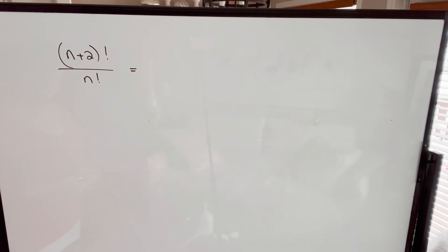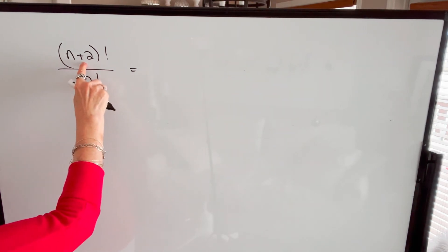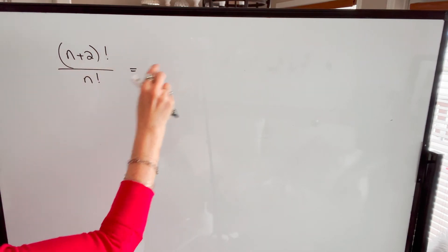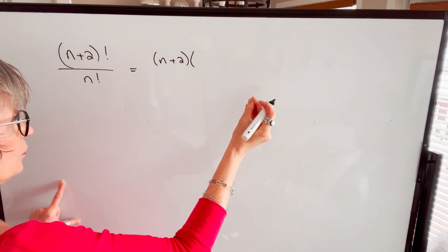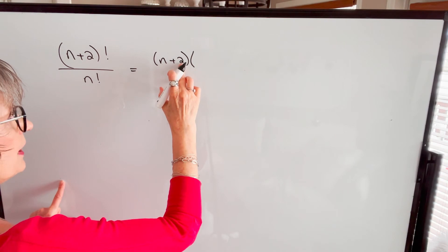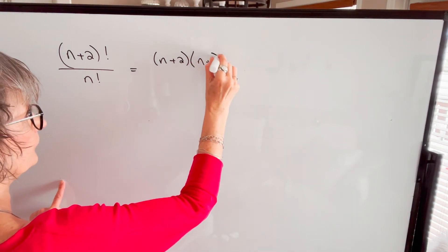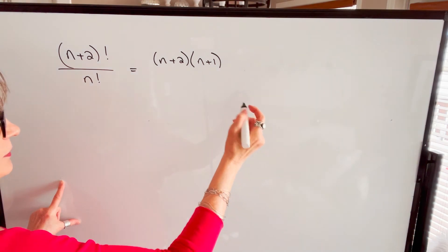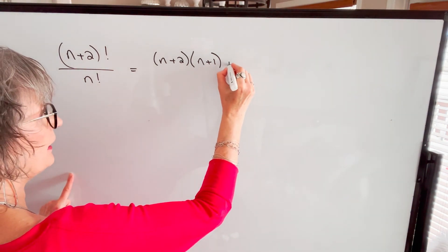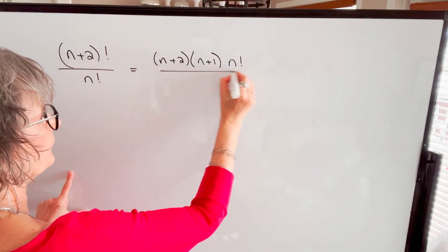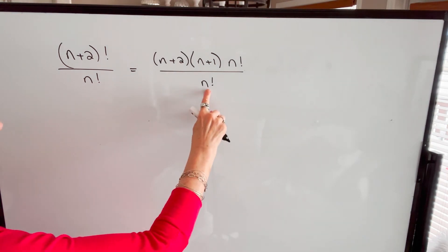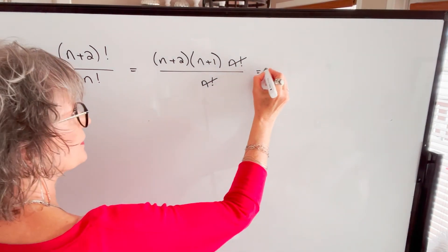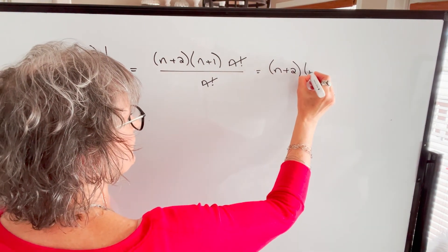If we have (n+2)! divided by n!, this is the larger number, so I'm going to break it down until I get to n factorial. That would be n+2 times the next lowest number, n+2 minus 1, which is n+1, then the next lowest, subtracting 1, which is just n factorial. So the numerator is (n+2) times (n+1) times n factorial, and the denominator is n factorial. We cancel n factorial, and our result is (n+2)(n+1).